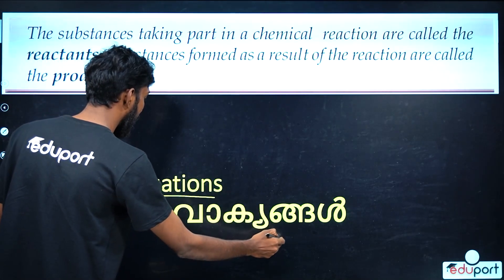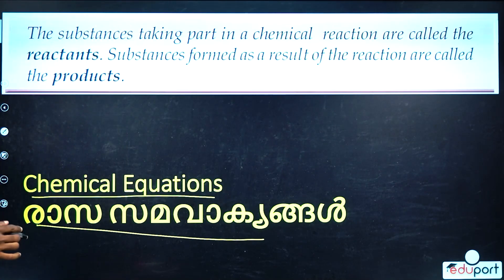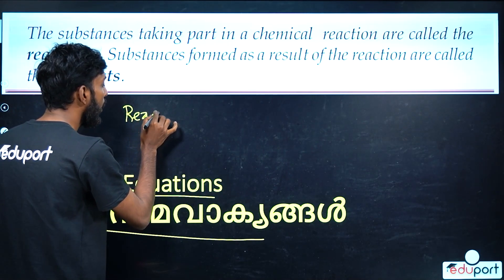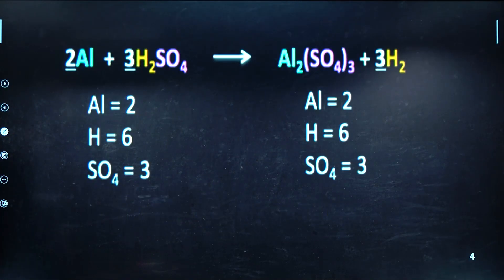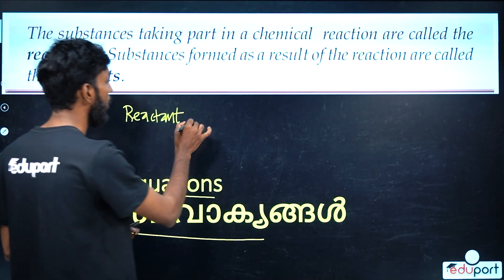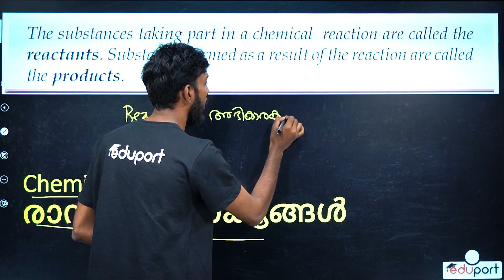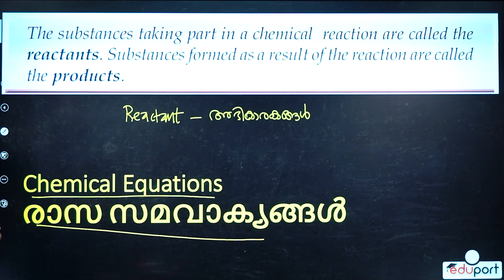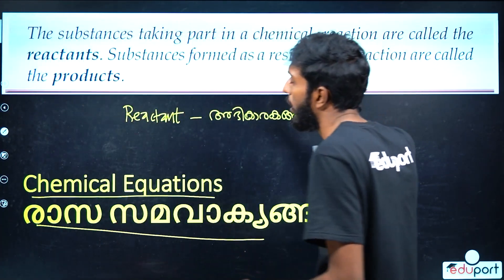In a chemical equation, the substance taking part in the chemical reaction is called a reactant. The substance formed as a result of the reaction is called a product.